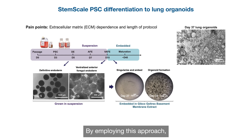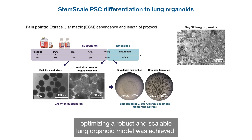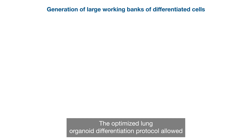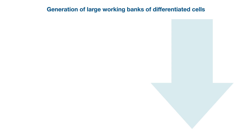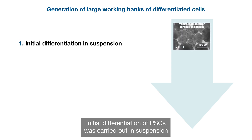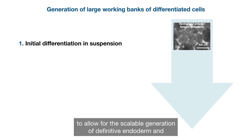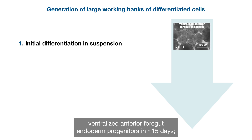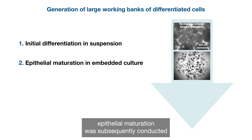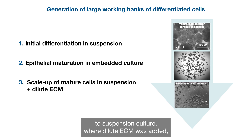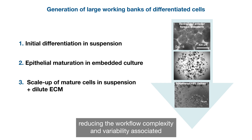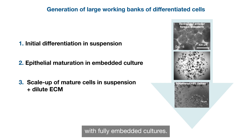By employing this approach, optimizing a robust and scalable lung organoid model was achieved. The optimized lung organoid differentiation protocol allowed for the generation of large working banks of differentiated cells, where initial differentiation of PSCs was carried out in suspension to allow for the scalable generation of definitive endoderm and ventralized anterior foregut endoderm progenitors in about 15 days. Epithelial maturation was subsequently conducted in embedded culture to ensure proper specification. The scaling up of matured cells can subsequently be transitioned back to suspension culture where dilute ECM was added, reducing the workflow complexity and variability associated with fully embedded cultures.